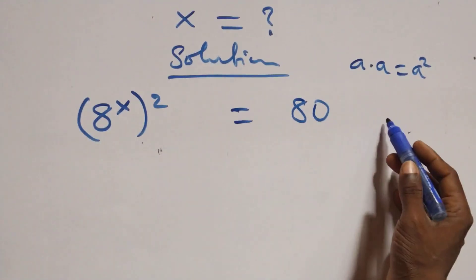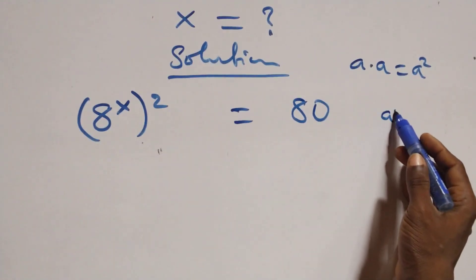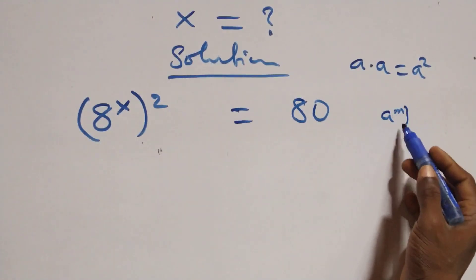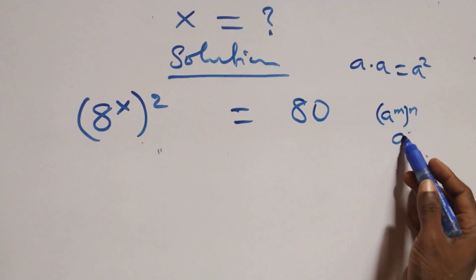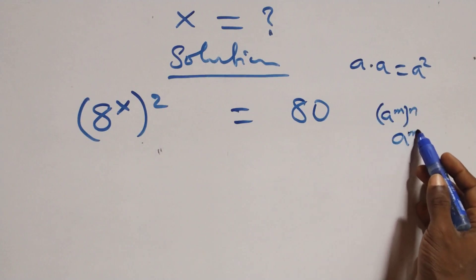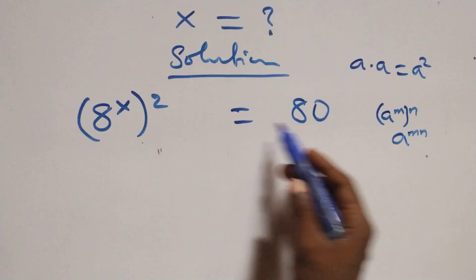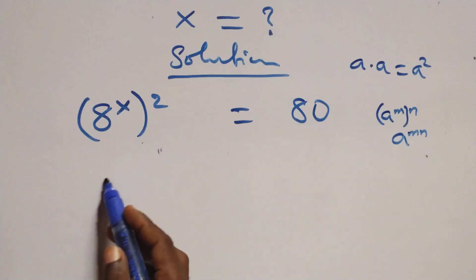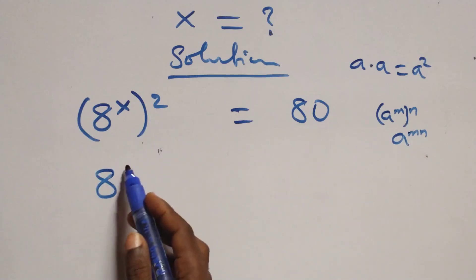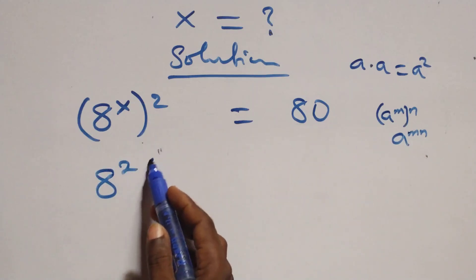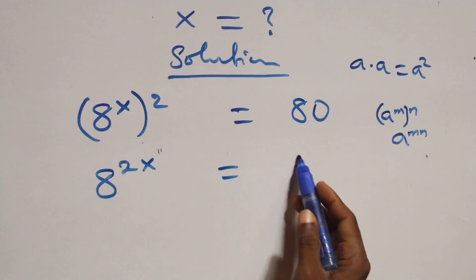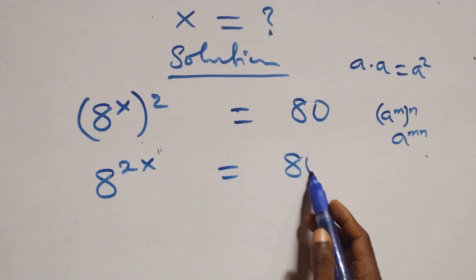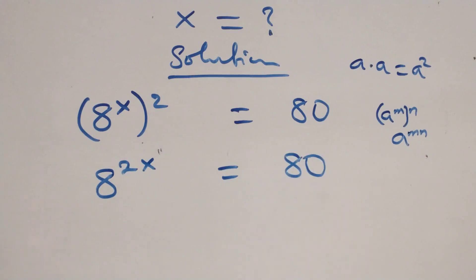This also follows: we have a raised to power m, raised to power m — this is the same thing as a raised to power mn, where the powers are multiplied. So we have a raised to power 2x equals to 80.